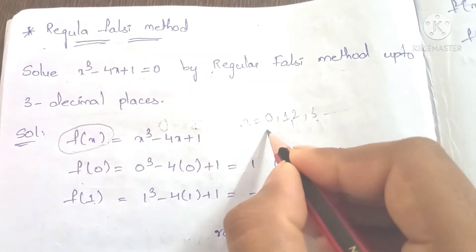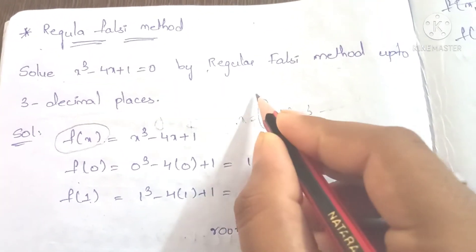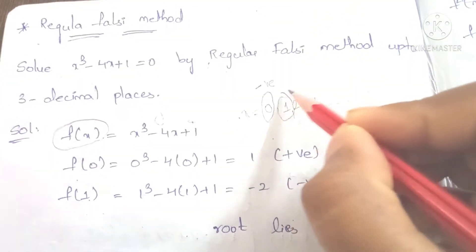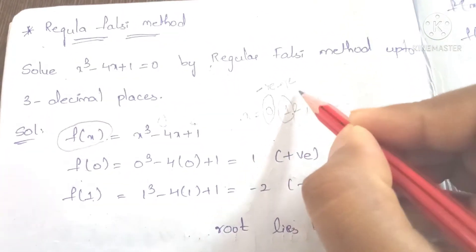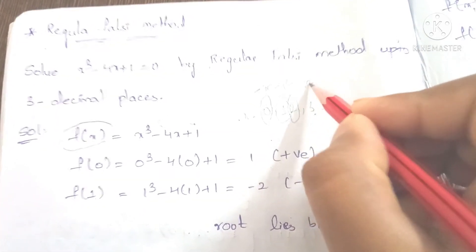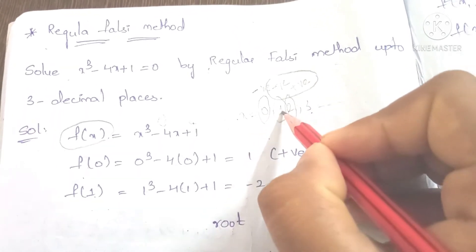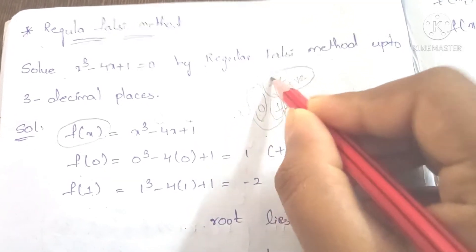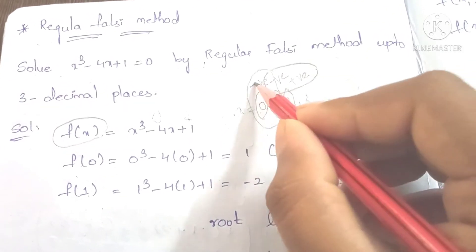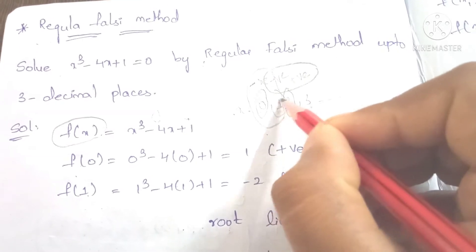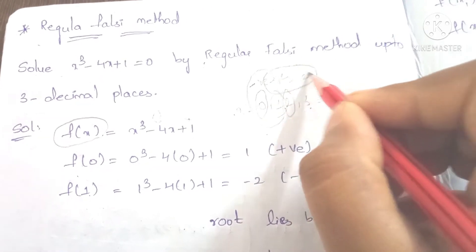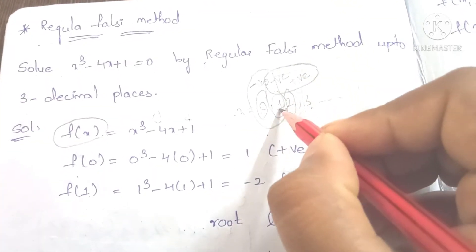To find the first root, we check f(0) — this gives a negative value. Then f(1) — this is also negative. Next we check for positive roots. We compare values and find that the root lies between 1 and 2, where signs are opposite.